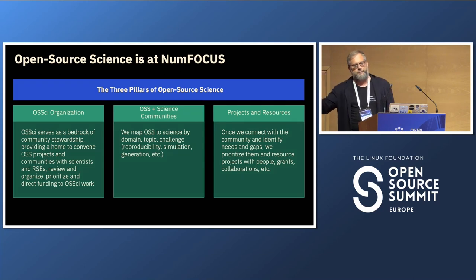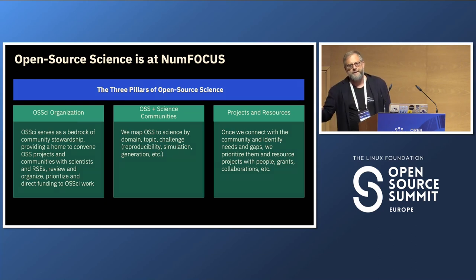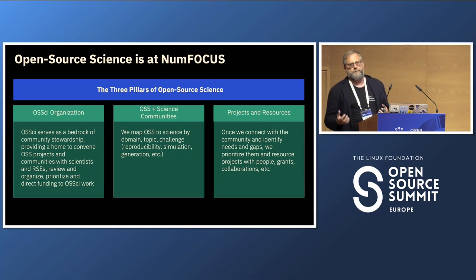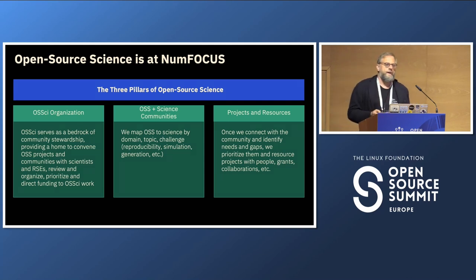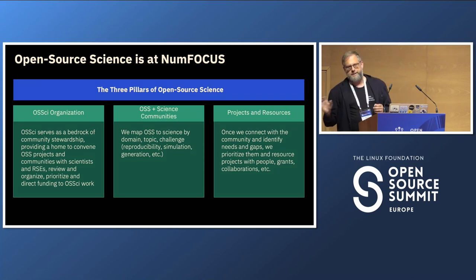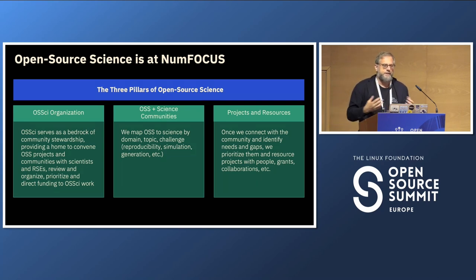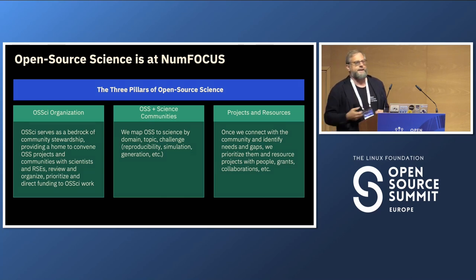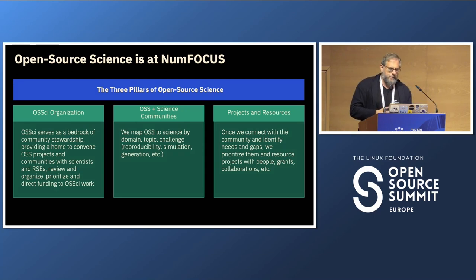Scientists generally don't care about software. Like if all the software will disappear and cancer will be solved, cancer scientists will probably take the deal. For us it's very hard to comprehend because we live in software and we enjoy software. Scientists are basically very passionate about their scientific research, so they will use tools, whatever is necessary — they will use paid Windows lab software because that's what they have.